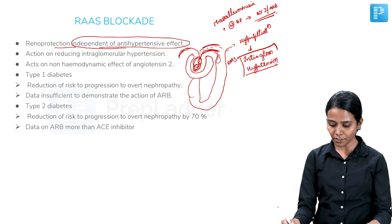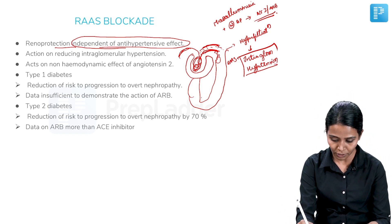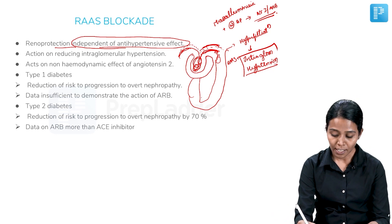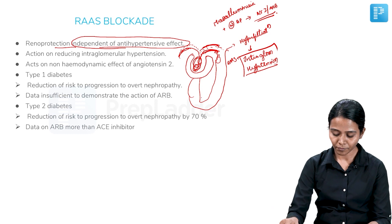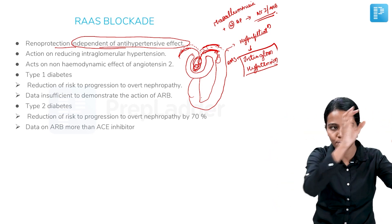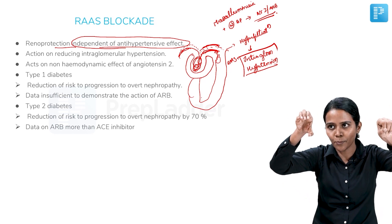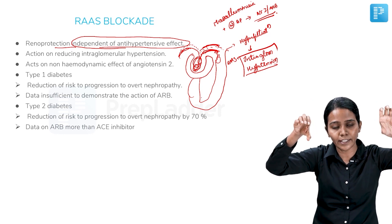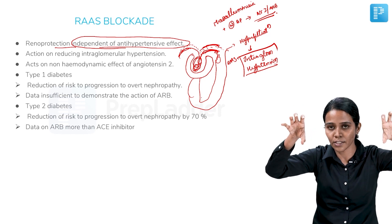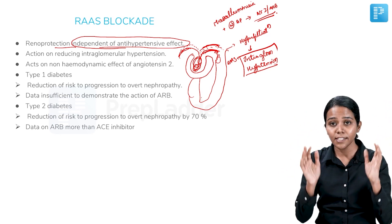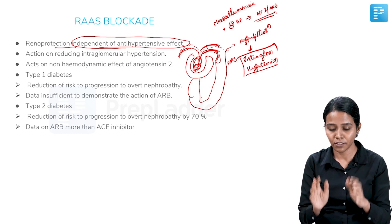What happens by giving ACE inhibitor? This effect is mediated by angiotensin 2, which causes afferent arteriolar dilatation and efferent arteriolar vasoconstriction. By giving ACE inhibitor, this effect is reversed. Think of two pipes — the afferent pipe has become bigger and the efferent pipe is still smaller, so the pressure in between increases. Once the ACE inhibitor is given, it dilates the efferent arteriole as much as the afferent arteriole is dilated, so the pressure in between falls and there is reduced intraglomerular hypertension. This is the mechanism by which RAS blockade acts.